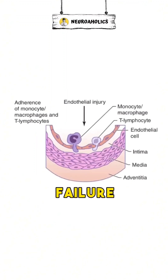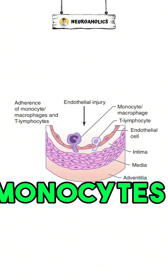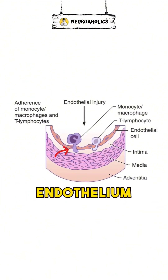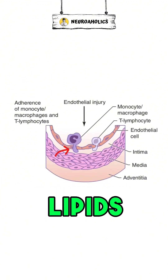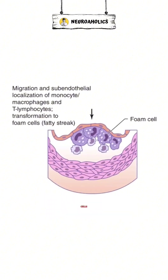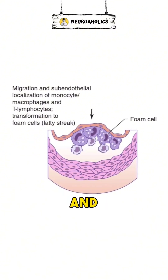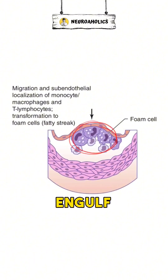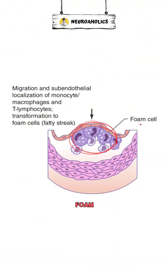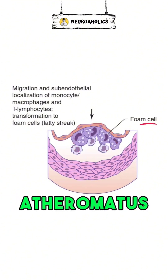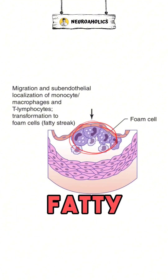Endothelial failure lets circulating monocytes stick to and move under the endothelium, and it lets lipids build up inside the cells. Inflammation follows, and macrophages made from monocytes engulf the lipids. This makes lipid-filled foam cells, which are part of an early atheromatous plaque called the fatty streak.